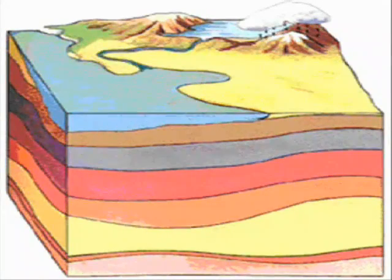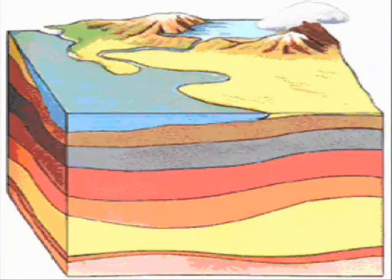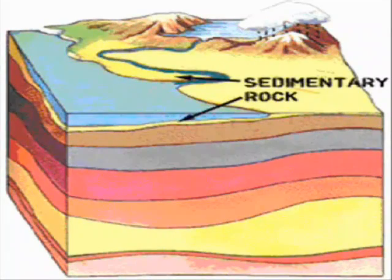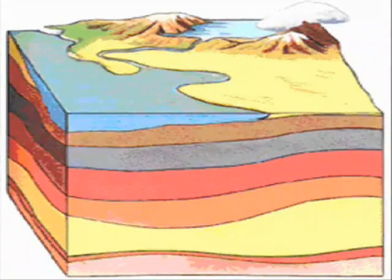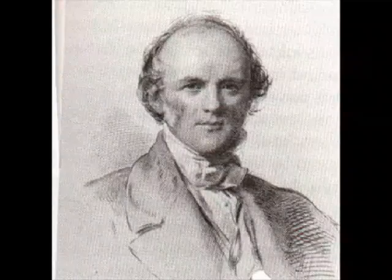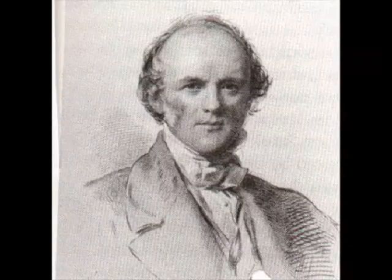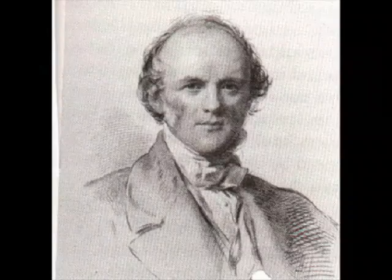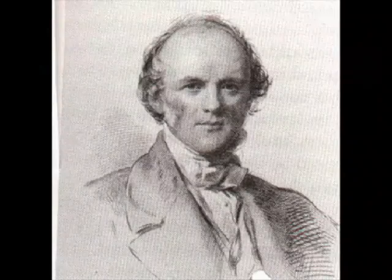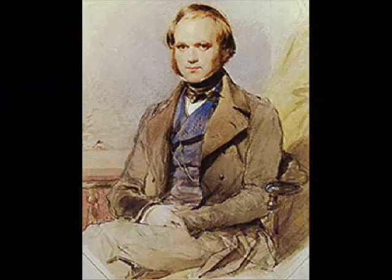According to this theory, the development of the surface of the globe has been going on through all the ages without any disturbances. The process of very slow change that we observe at present has been the only process of importance from the beginning. This theory, first advanced by Hutton in 1795 and Lamarck in 1800, was elevated to its present position as a scientific law by Charles Lyell, a young attorney whose interest in geology was to make him the most influential person in that field, and by Lyell's disciple and friend, Charles Darwin. Darwin built his theory of evolution on Lyell's principle of uniformity.